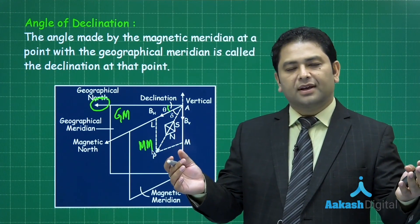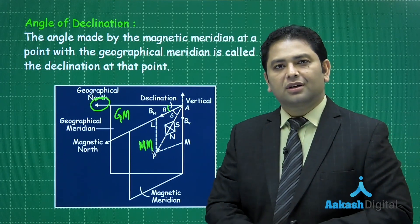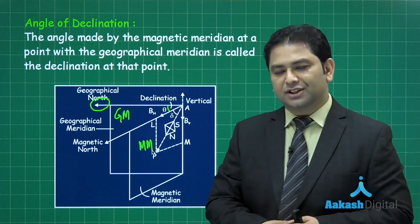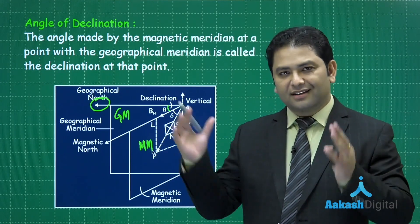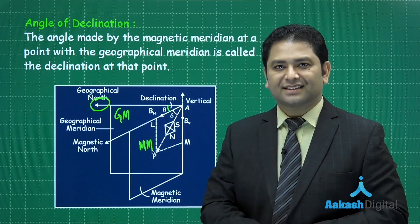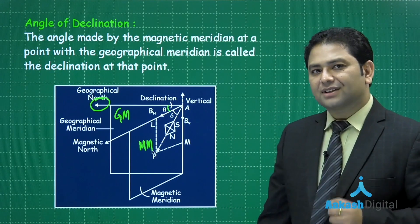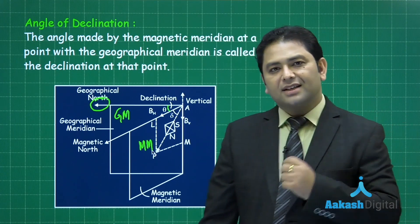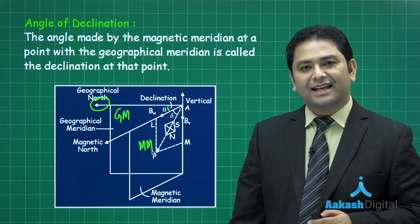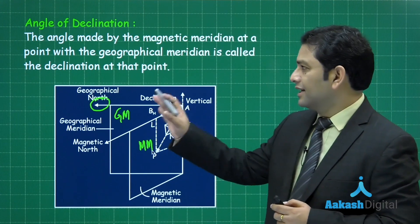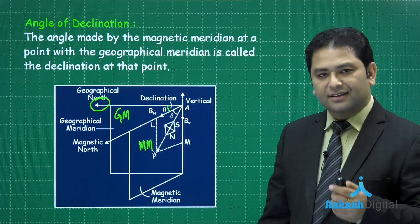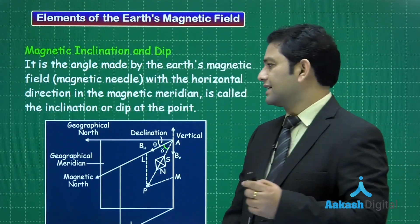This declination varies from location to location. As a thought exercise, try to find the location where the declination would be zero — there do exist such points on Earth's surface. Now let's try to understand the next concept, which is inclination and dip.